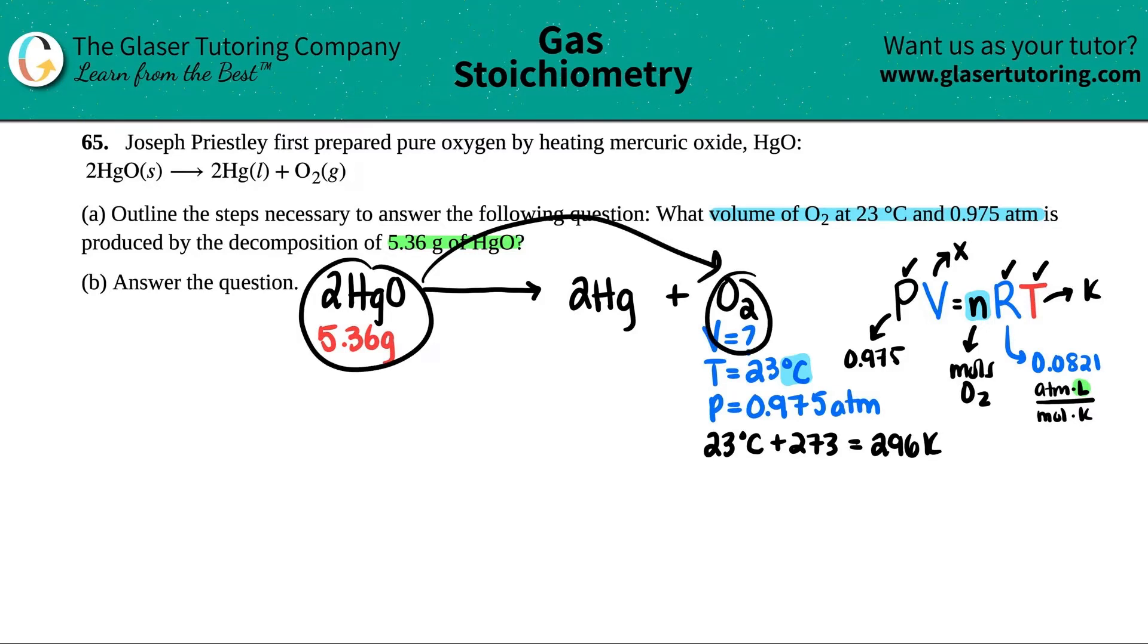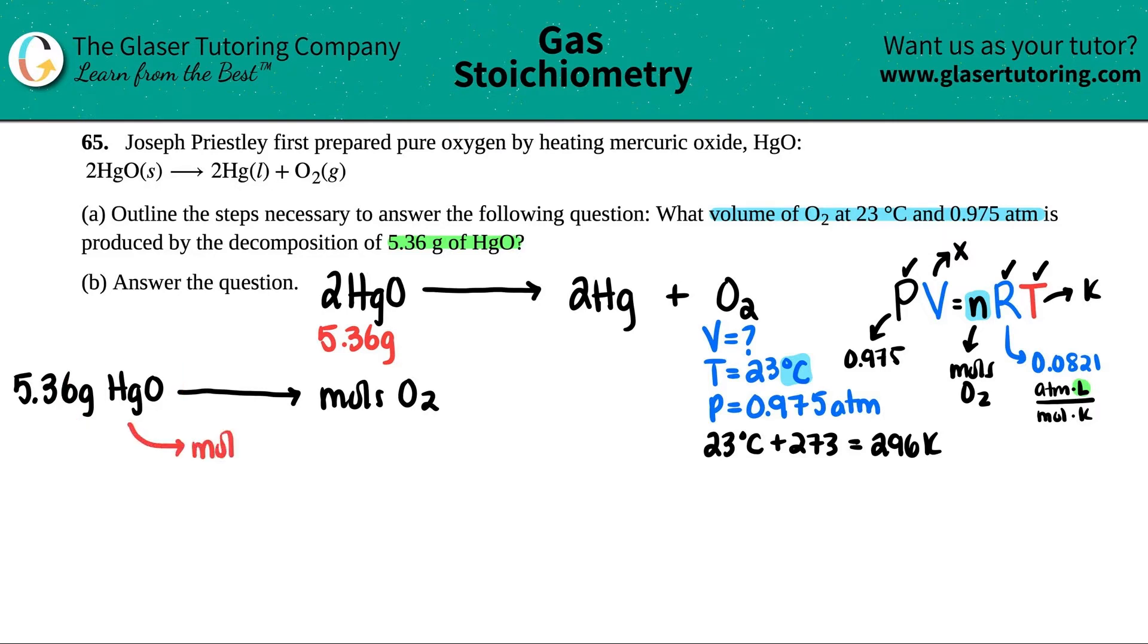This is maybe four or five chapters back. In essence, we have to go from 5.36 grams of HgO and we've got to get to the moles of O2. In order to do that, you've got to go from grams of HgO to moles of HgO. All of this should be like a refresher—this is everything we learned from before. This is the new stuff: plugging it into the formula.